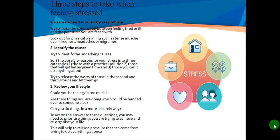Step three: Review your lifestyle. Could you be taking on too much? Are there things you are doing which could be handed over to someone else? Can you do things in a more leisurely way? To act on the answers to these questions, you may need to prioritize things you are trying to achieve and reorganize your life.